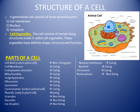The three essential parts of a generalized cell are: the cell membrane, the nucleus, and the cytoplasm. Within these structures, some more sub-structures are present, which we will also look into in detail.